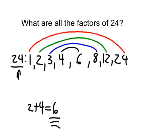24 divided by 1 is 24, 24 divided by 2 is 12, 24 divided by 3 is 8, 24 divided by 4 is 6, 24 divided by 6 is 4, 24 divided by 8 is 3, 24 divided by 12 is 2, and 24 divided by 24 is 1.